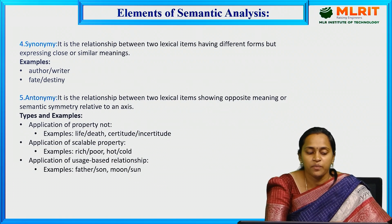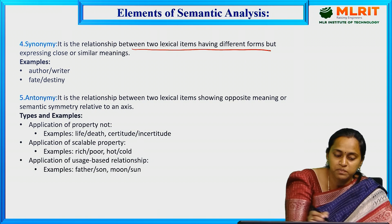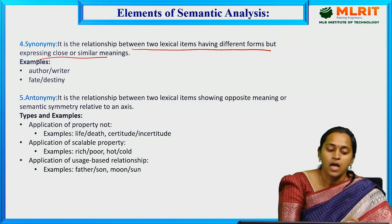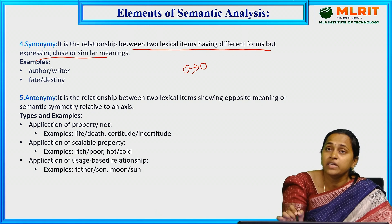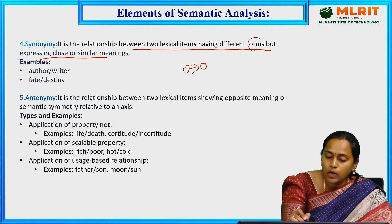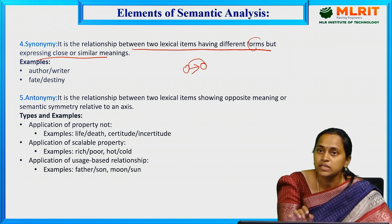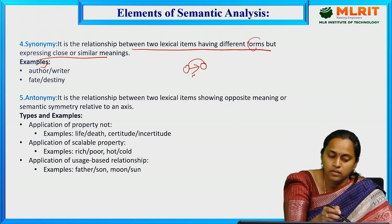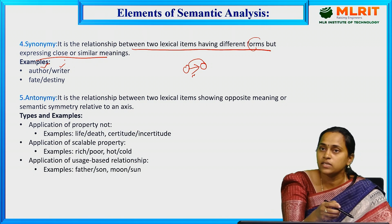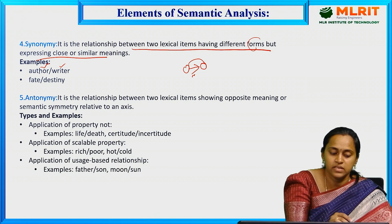Next, synonymy — the relationship between two lexical items having different forms but expressing close or similar meanings. For example, 'author' and 'writer' — they have a similar meaning but are not exactly the same. An author is not exactly a writer and vice versa. These are examples of synonymy.